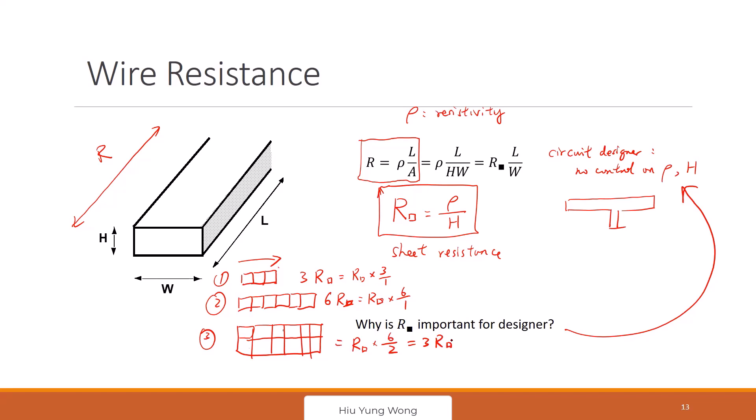So the total resistance, total resistance is just equal to number of square in the length direction divided by number of square in the width direction times R square.